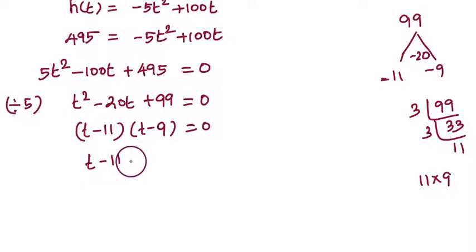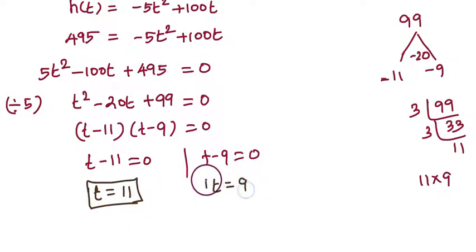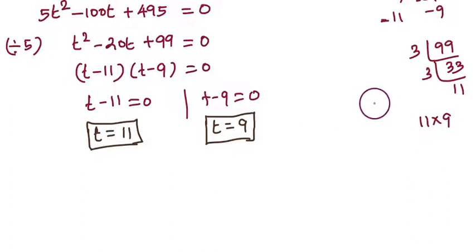So t - 11 = 0 or t - 9 = 0. Therefore t = 11 or t = 9. If t = 9, the height is 495 feet. If t = 11, the height is also 495 feet.